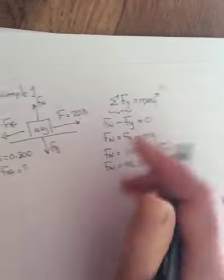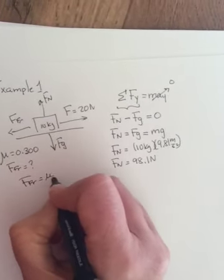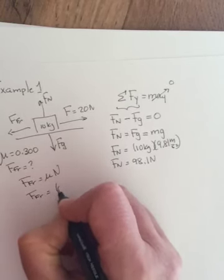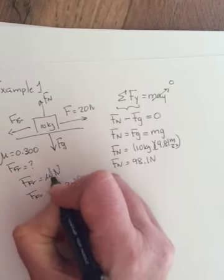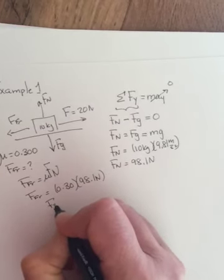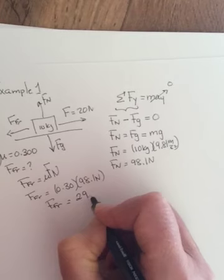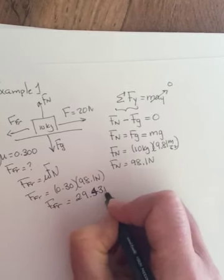So now, once we have that, now we can find our FFR. FFR is equal to mu FN. So FFR is equal to 0.3 times 98.1 newtons. When you multiply this out, you get a force of 29.43 newtons.